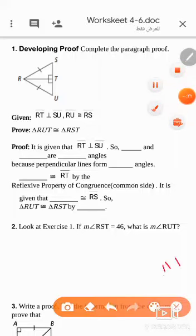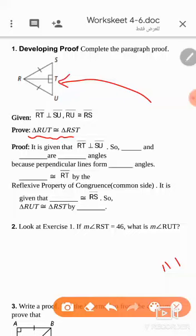We want to prove that these two triangles are congruent. The two triangles are right triangles, and we have congruent hypotenuse and a common side RT, so those triangles are congruent by the HL theorem.